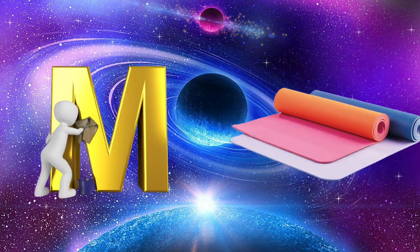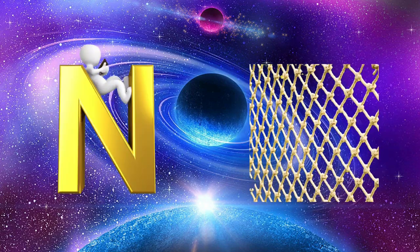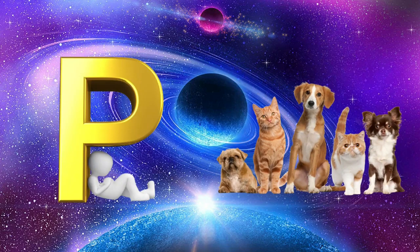M is for mat, m-m-mat. N is for net, n-n-net. O is for orange, o-o-orange. P is for pet, p-p-pet.